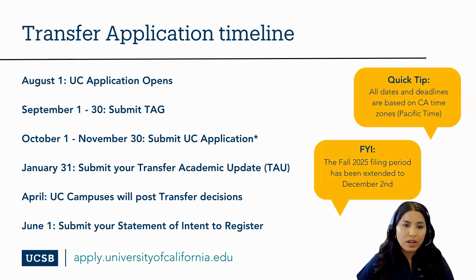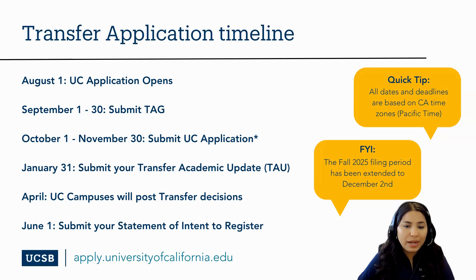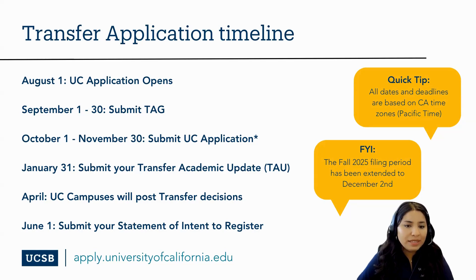The UC application opens on August 1st; however, applications may only be submitted during the fall application filing period between October 1st through November 30th. The fall 2025 filing period has been extended to December 2nd. If you would like to participate in the Transfer Admission Guarantee, you may only submit between September 1st and September 30th. In January, we'll ask transfer applicants for a transfer academic update, where you'll share your fall term grades and any changes to your coursework. Mid to late April is when we normally release admissions decisions, and by June 1st we'll ask that you submit your statement of intent to register.